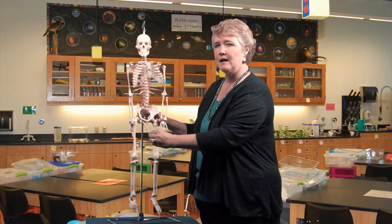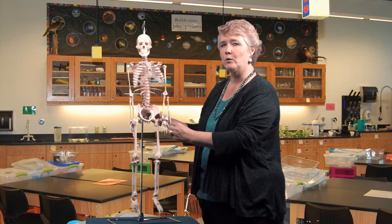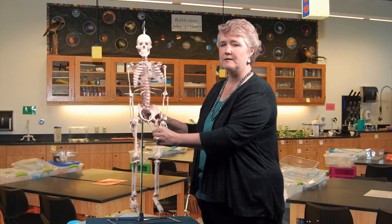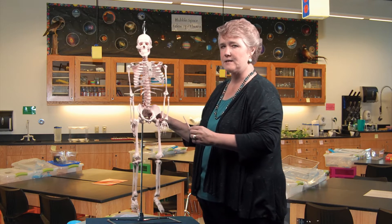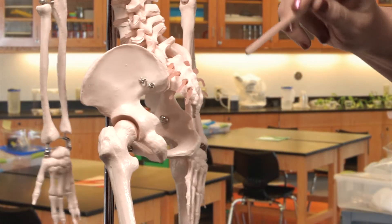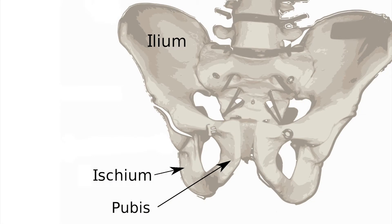The pelvic girdle attaches the lower limbs to the axial skeleton and it consists of the sacrum, the pubis, the ischium, and the ilium.